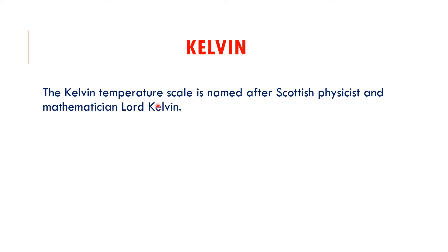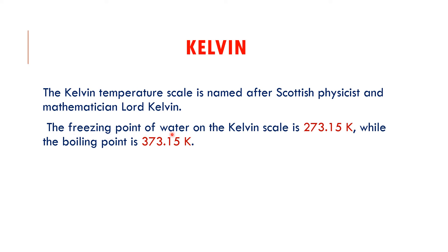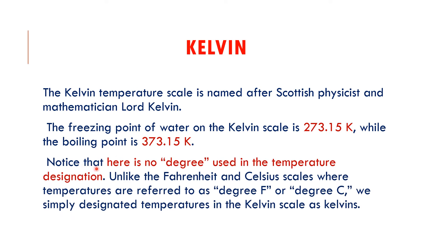The Kelvin temperature scale is named after Scottish physicist and mathematician Lord Kelvin. The freezing point of water on the Kelvin scale is 273.15 K, while the boiling point is 373.15 K. For convenience in calculations, we use the round figures of 273 and 373 Kelvin. Notice that no degree symbol is used — unlike Fahrenheit and Celsius, we do not say 'degree Kelvin'; we simply say Kelvin.